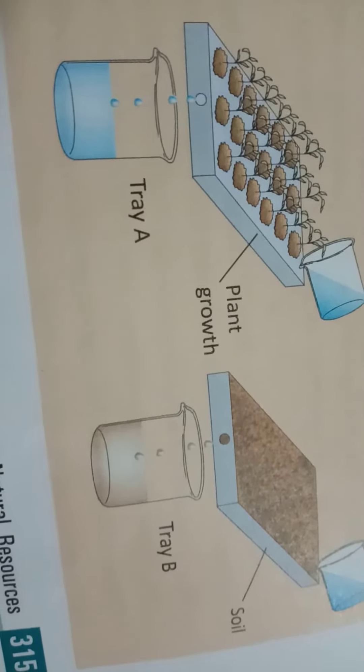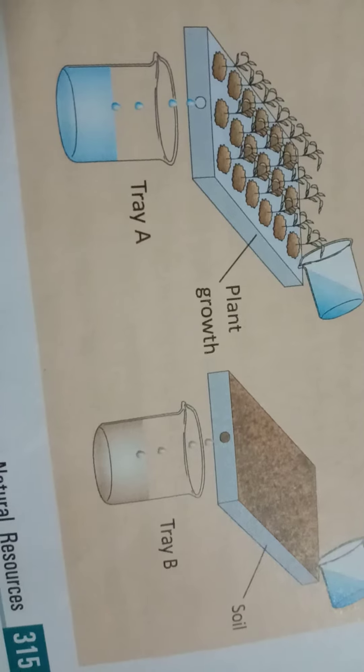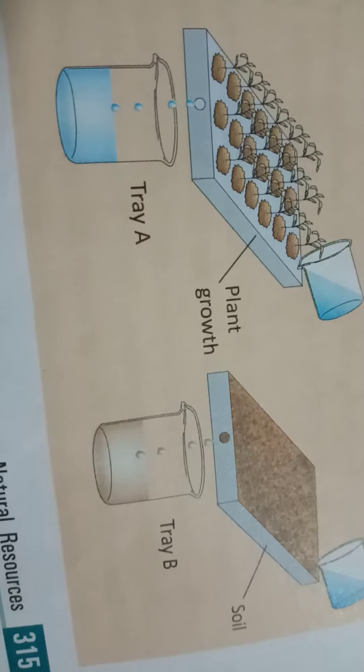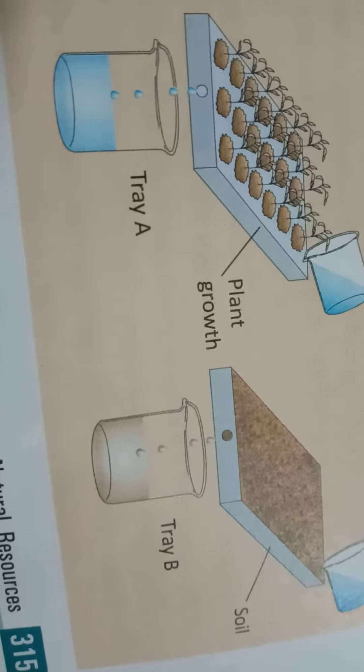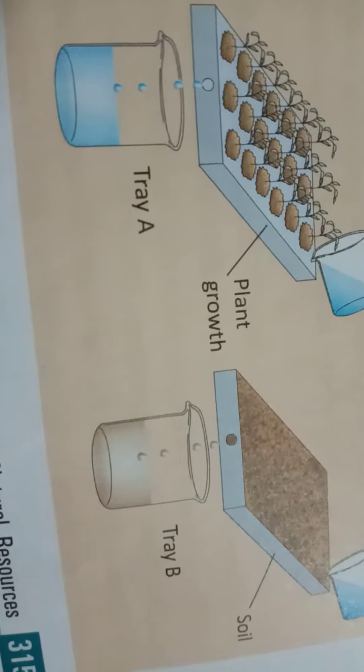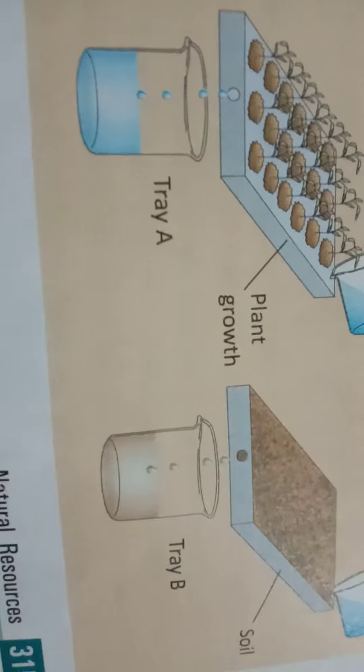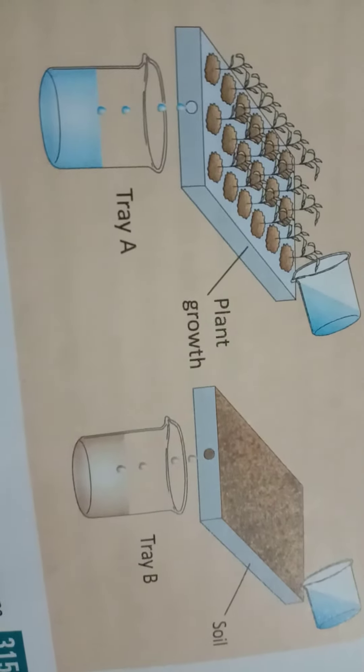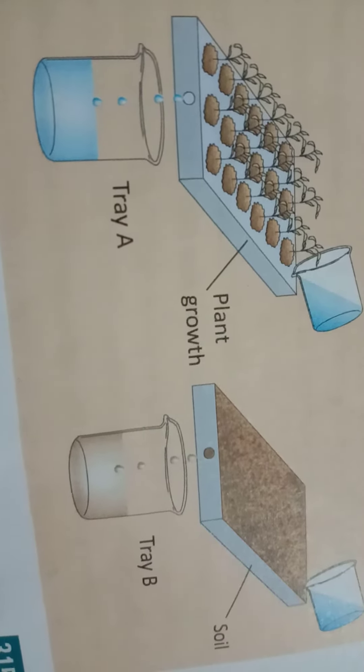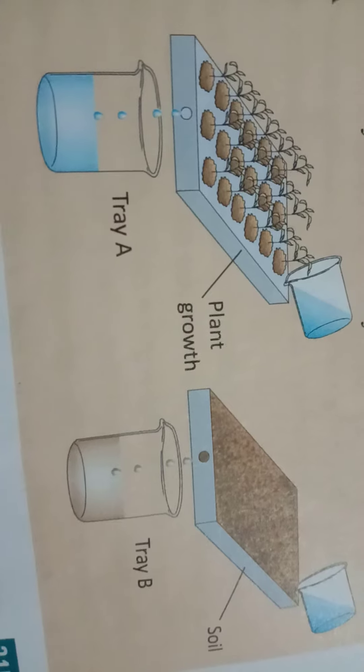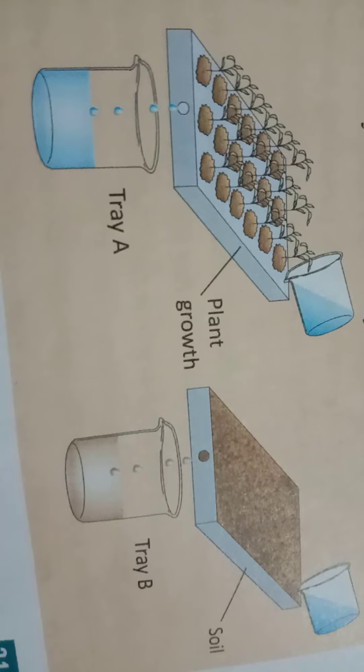Listen, a student will observe the role of plants in preventing soil erosion. Take two trays. In one tray you have to take seedling plants, meaning small plants, but in another tray no plant, only soil.